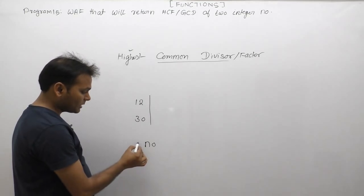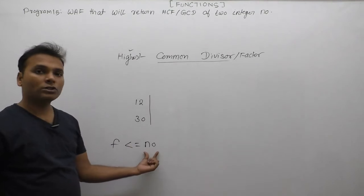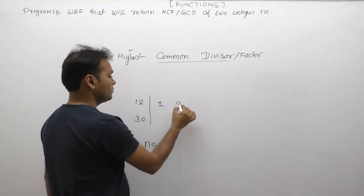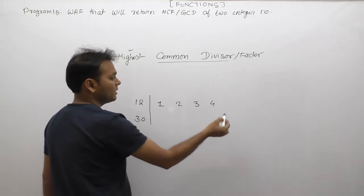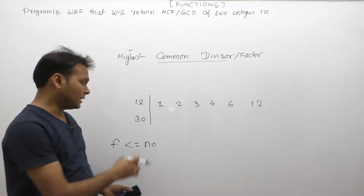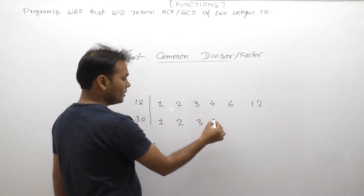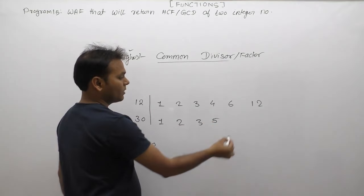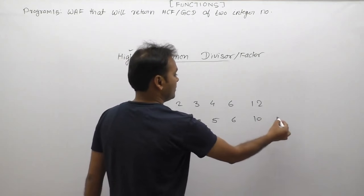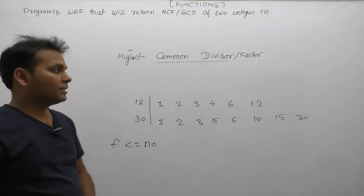For any number, the possible factors are either less than or equal to that number. For 12, the possible factors are: 1, 2, 3, 4, 6 (12 is divisible by these), but 5 is not possible. For 30, the possible factors are: 1, 2, 3, 5, 6, 10, 15, and 30 itself. So these are the possible factors of 12 and 30.